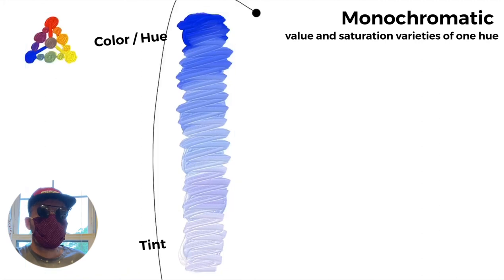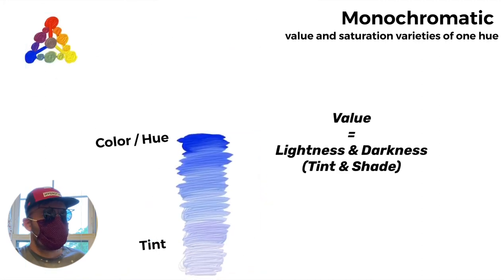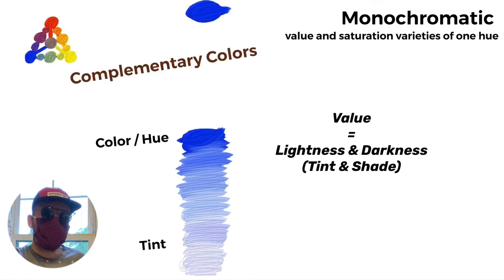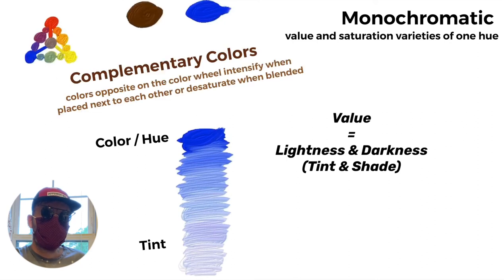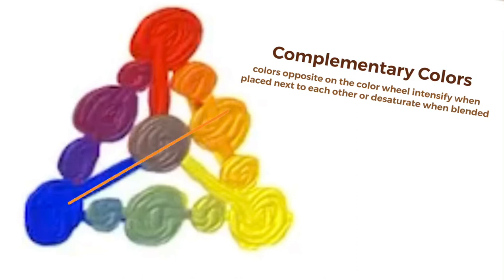But what about the shade? When we talk about value structures, we refer to lightness and darkness, right? So is it possible to get this ultramarine to be darker? Yeah, sure, you can. And the way you do that is by using the complementary color of the hue you want to adjust or you want to shade. In this case, the opposite color, the complementary color is orange.